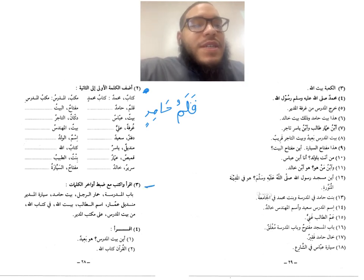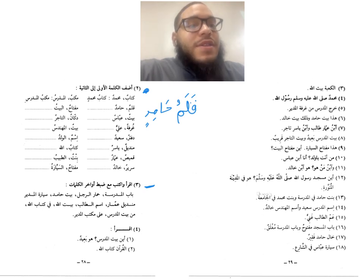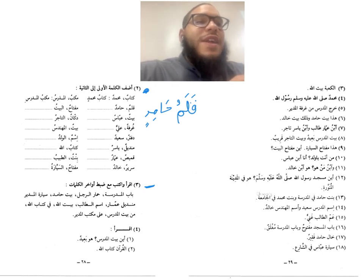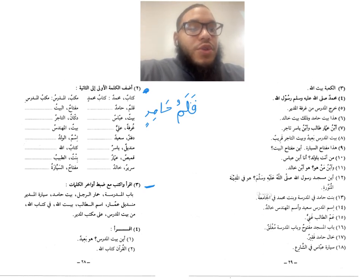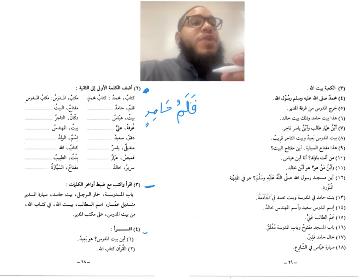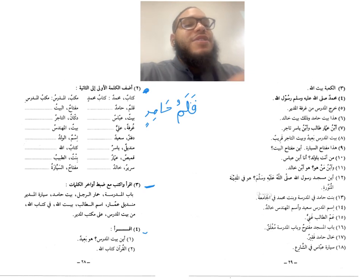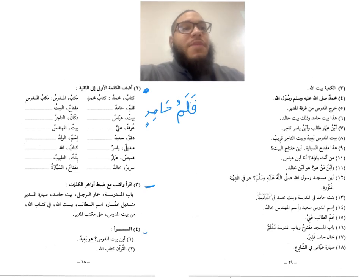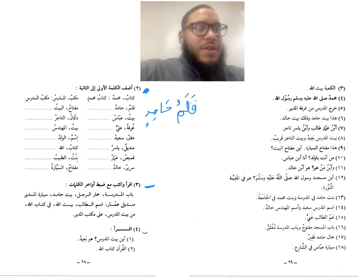Then we have another exercise: Iqra wa-aktub ma'adabti awakhil al-kalimat — read and write whilst putting the correct vowel sounds on the end of each word. Then we have number four, Ar-rabi' — Iqra — just read. This is reading practice: practice reading correctly without any vowel sounds or tashkeel. This aids you in getting used to reading without vowels and recognising the rules you have learned — when a word takes Kasra instead of Dhamma, and whether there is tanwin or not.